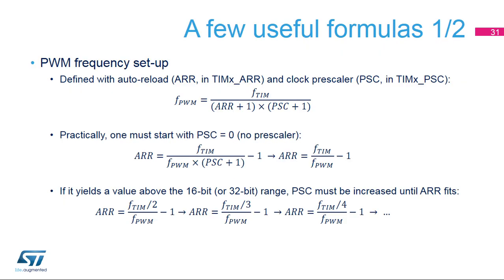This slide explains how to set the timer's PWM frequency. This parameter is defined using the auto-reload value or ARR programmed in the TIMX ARR register and the clock prescaler programmed in the TIMX PSC register. The PWM frequency is given by the timer operating frequency FTIM divided by ARR plus 1 times the clock prescaler plus 1. Practically, finding both register values is an iterative process where one must start from PSC equals 0.